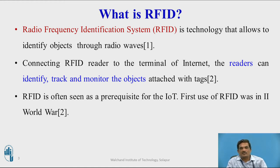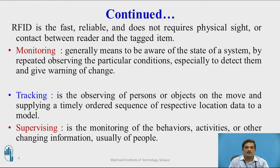The first use of RFID was in the Second World War, where it was used to locate the enemy location in a war field. RFID is fast, reliable, and does not require physical sight or contact between the reader and the tagged item. Without any physical contact or lighting system, if objects come within the proximity area, they will automatically be read by the reader. This is the main difference between RFID and the barcode system — in barcode, the object needs a lighting system or close contact to be tracked.